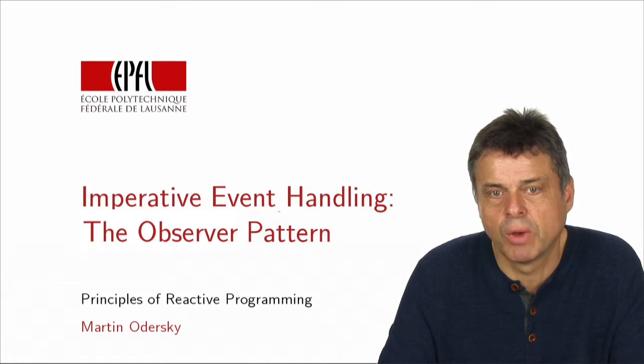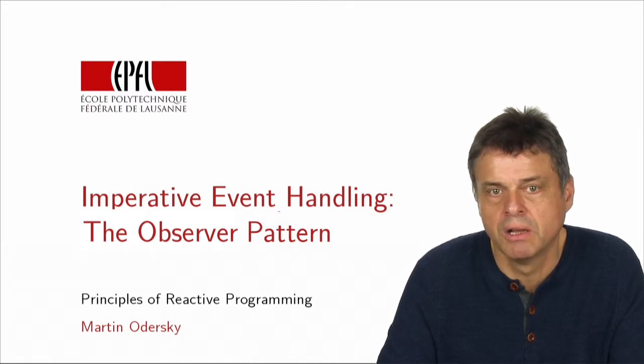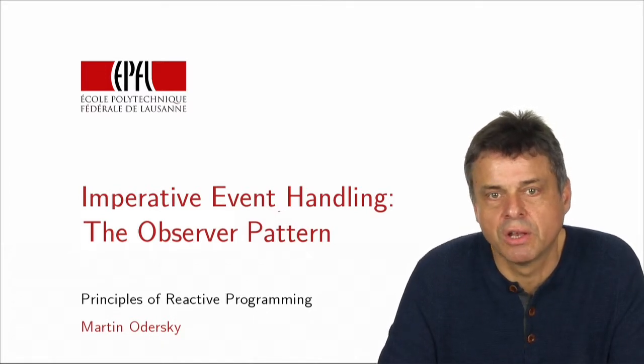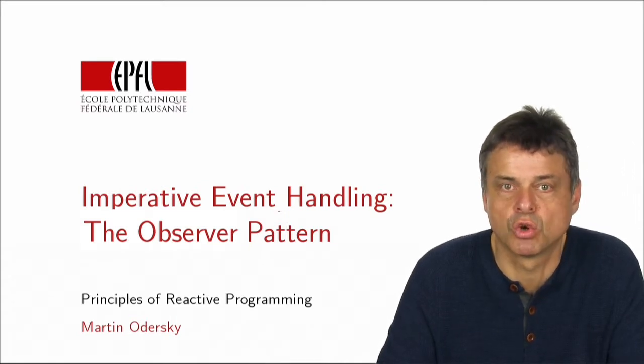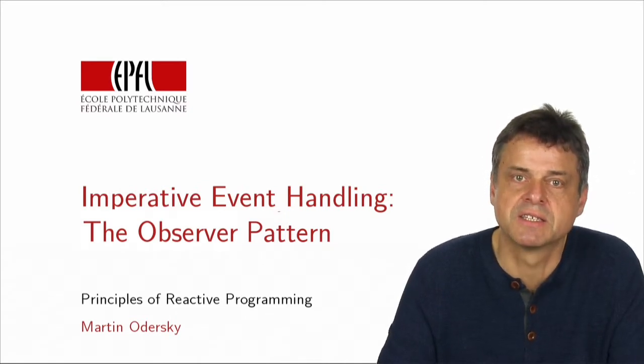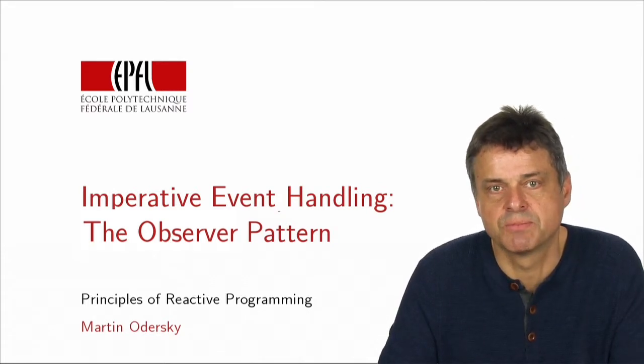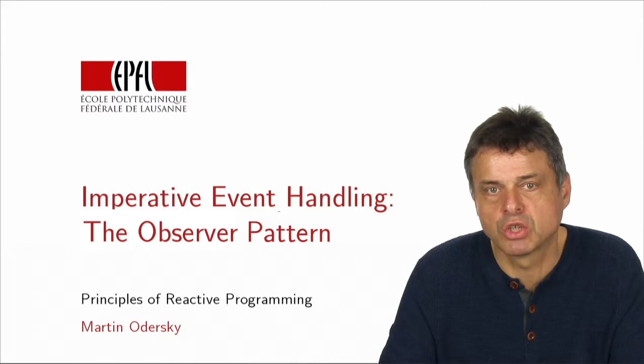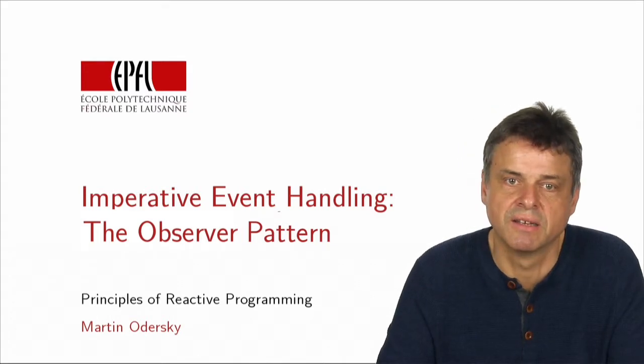The traditional way to deal with user interfaces to handle the events there is based on what we call the observer pattern. We're going to explain what it is, and we are going to explain what it's good for, and also what some of its shortcomings are. That will lead us then in the next two modules to a different way to treat events in these programs, which is called functional reactive programming, and where events are essentially summarized in signals.